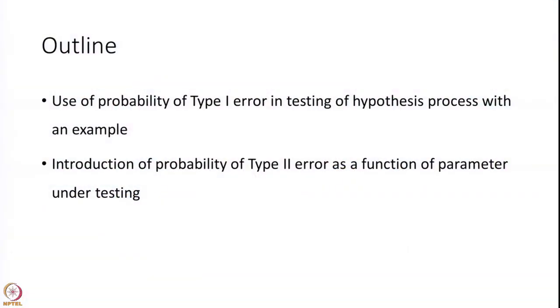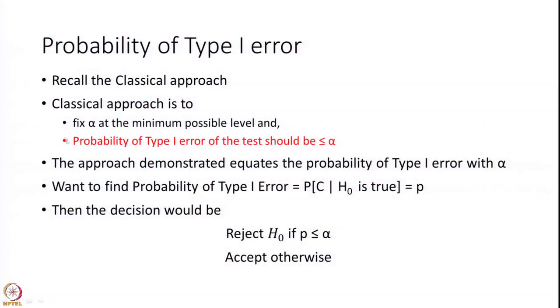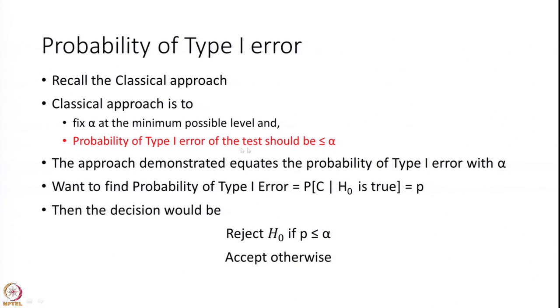In this session we would like to talk about the type 1 error in the hypothesis testing process and about type 2 error as a function of the parameter under testing. So far we set up the procedure using the six steps of classical testing and defined the critical region by equating it to a fixed type 1 error alpha. Now we would like to set up a test procedure in which we actually calculate the probability of type 1 error and compare it with alpha.